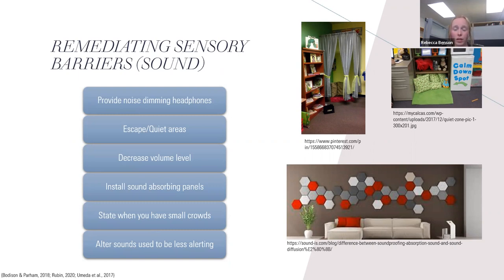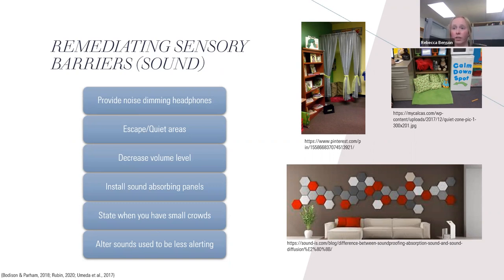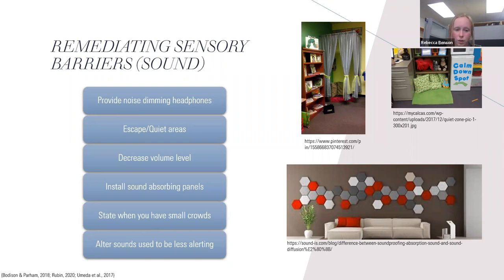Sound-absorbing panels are a huge help. It has been found that individuals with autism can actually hear reverberations off the walls, adding even more sensory input and making it difficult to focus on what someone is saying or doing. When there's so much input coming in, it's very difficult to concentrate. You can also alter sounds to be less alerting and more pleasant to the ear.